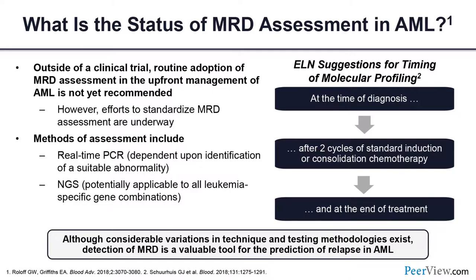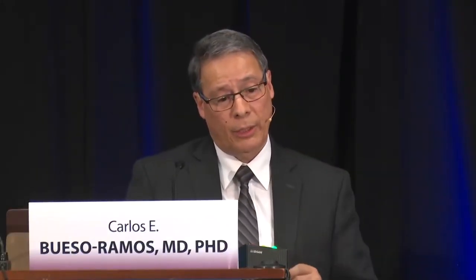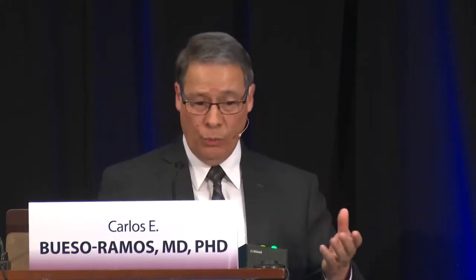Looking at the ELN risk classification for younger adults, the intermediate groups 1 and 2 have essentially collapsed. The adverse risk group now includes BCR-ABL1, mutated TP53, mutated ASXL1, mutated RUNX1, and wild-type NPM1 with high FLT3-ITD allelic ratio. The favorable group is being cleaned up around core binding factors, within which additional molecular changes allow prediction of response versus non-response.